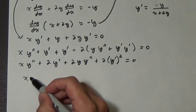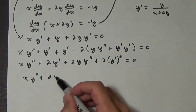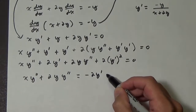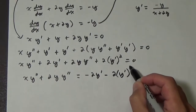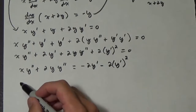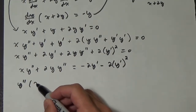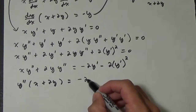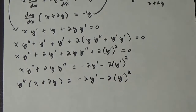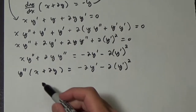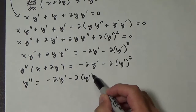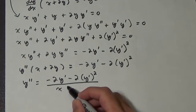So we're going to have x y double prime plus 2y y double prime, and this equals negative 2y prime minus 2y prime squared. Now we factor out y double prime: y double prime times (x plus 2y) equals negative 2y prime minus 2y prime squared. Dividing each side by (x plus 2y), we get y double prime equals (negative 2y prime minus 2y prime squared) all over (x plus 2y).